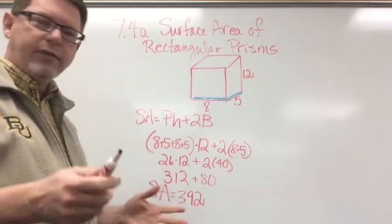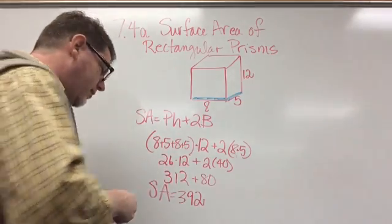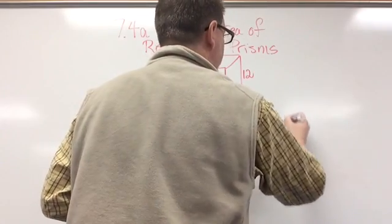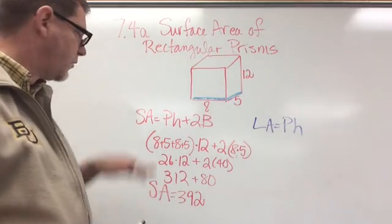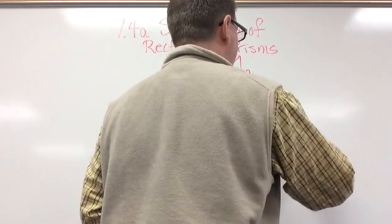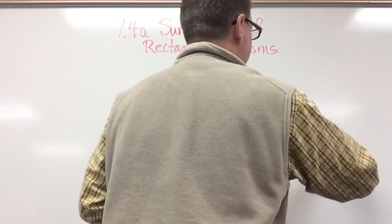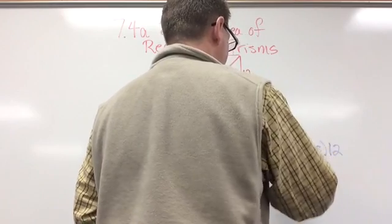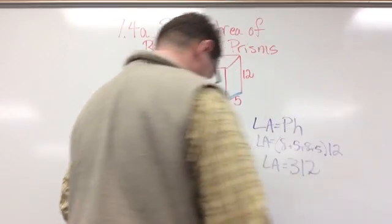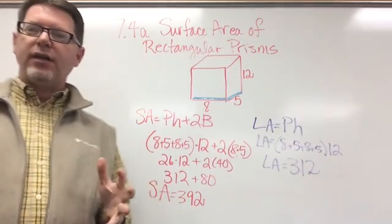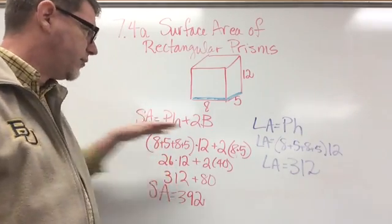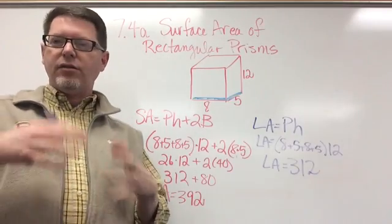Now what if I wanted to find just the lateral area? To find the lateral area, that's just capital P times H. Capital P is 8 plus 5 plus 8 plus 5, so we do that times 12. I've already calculated it — the lateral area is 312. It's important as you read problems and instructions that you understand whether you're finding lateral area or total surface area, and then use the correct formula for that.